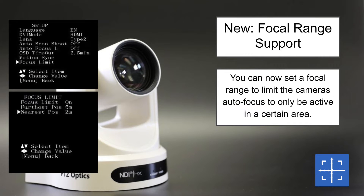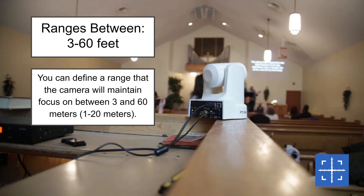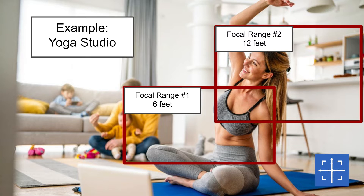A newer feature is finer-tuned focus control called the focal range. A focal range limits which areas the autofocus operates in — you can set a range and say between here and here I want autofocus to work, but anything closer or further, don't focus on it. This focus limit is an advanced tool that ensures the PTZ camera only focuses on areas you need, eliminating autofocus errors caused by people walking in and out. You can define a range between 3 and 60 feet or 1 to 20 meters.